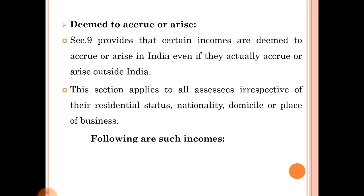The next term is 'deemed to accrue or arise'. This means income is not yet accrued, not yet declared by anyone, or not yet deposited to your account — but it is yet to be deposited to your account or given to you in the future. Section 9 provides that certain incomes are deemed to accrue or arise in India, even if they actually accrue or arise outside India. This section applies to all assessees irrespective of their residential status, nationality, domicile, or place of business. In some cases, if income is received or accrued outside India, we have to consider it as received or accrued in India.